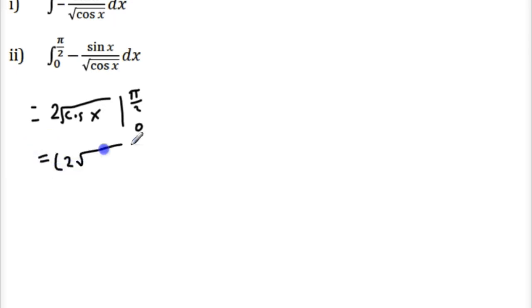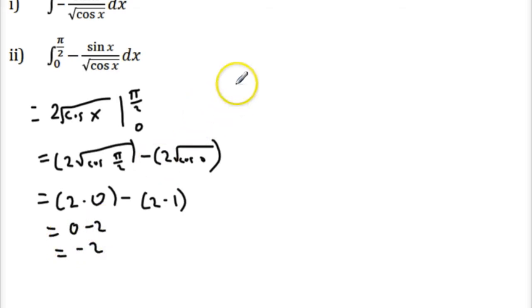This is 2 cos pi over 2 minus, if we plug the pi over 2 into here, and then we have to plug the 0 into here, minus 2 cos 0. So we just have to remember what is cos pi over 2 or cos 90 degrees, and that is 0. So we have 2 times 0. And what is cos 0? Well, it's 1. We have 2 times 1. So this gives us 0 minus 2, which is negative 2. So that works out nicely here.